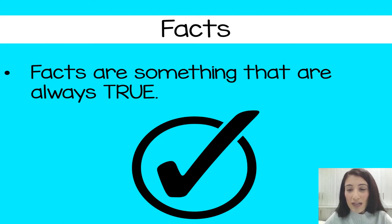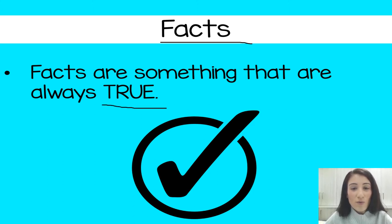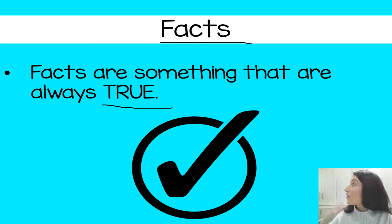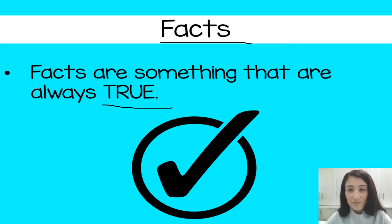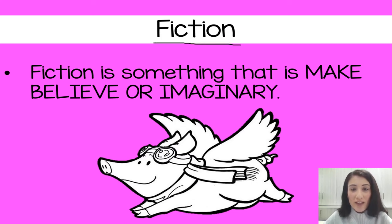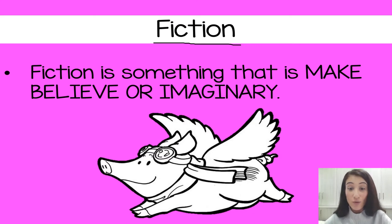Let's go through each one. Facts are something that are always true. A fact about today might be that it is a sunny day — I look out the window and it is sunny, so that is a fact, it is true. Fiction is something that is make-believe or imaginary. Just like our pig with wings, it could be a fish with wings or a cat that can talk — things that are made up or imaginary.